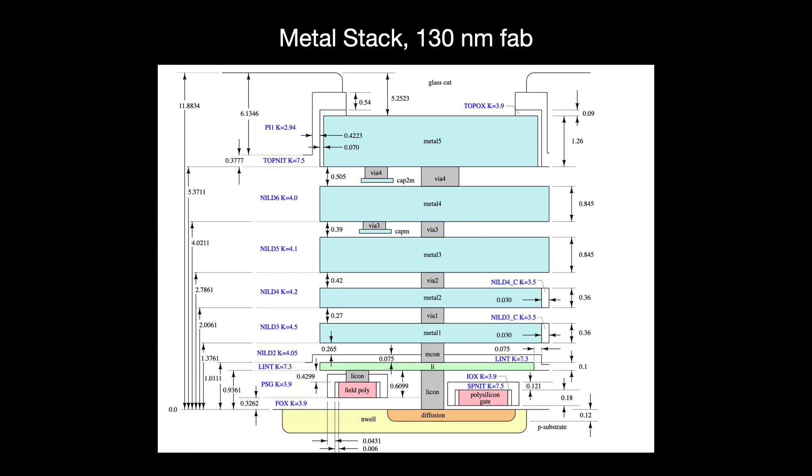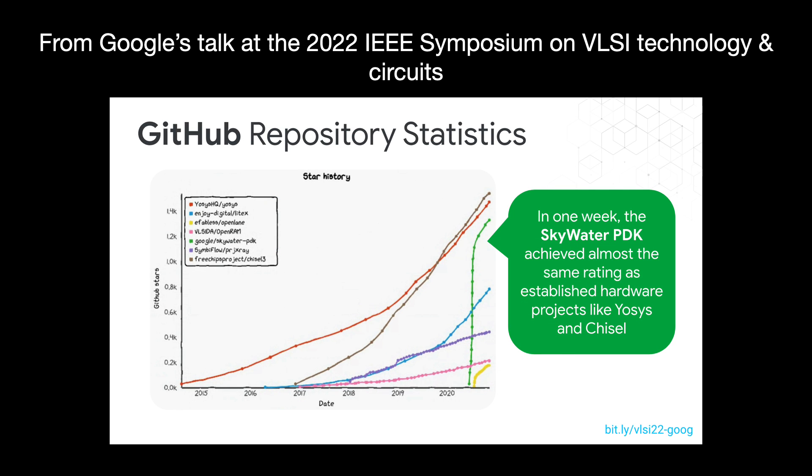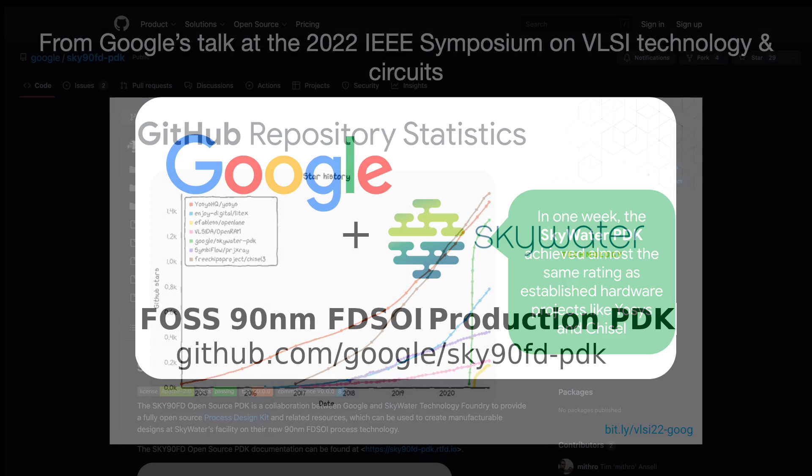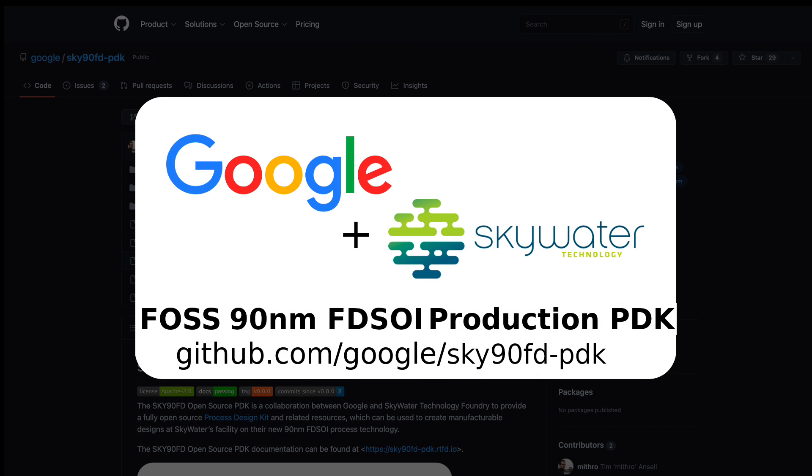This is the information fabless designers need from their manufacturer to design hardware. Notably, that Skywater PDK received as many GitHub stars in a week as other hardware projects like Reosis and Chisel did over their entire lifetimes. They are also working on open sourcing Skywater's 90nm fully depleted silicon-on-insulator process node, which is more of a specialty process that uses an insulator to prevent electrons from inappropriately burrowing through under the gate.